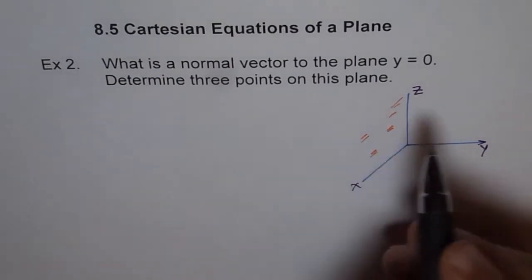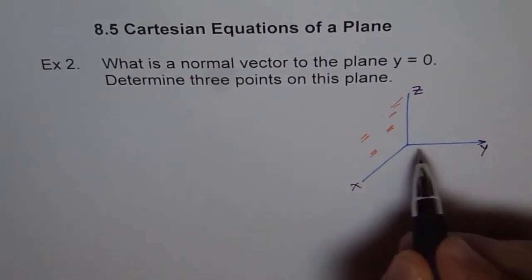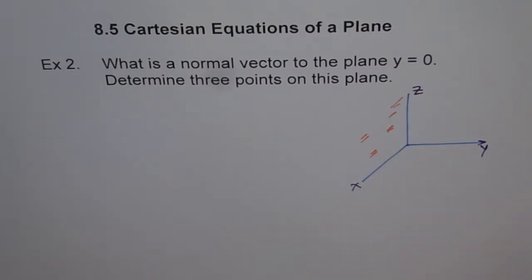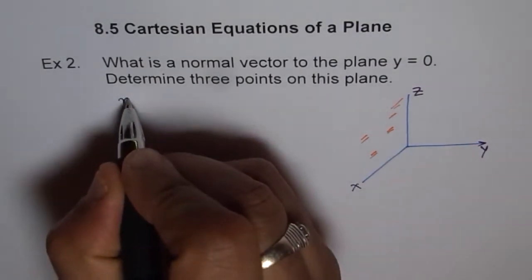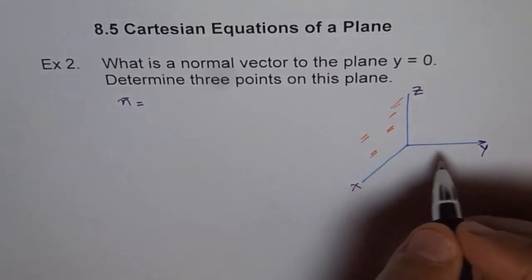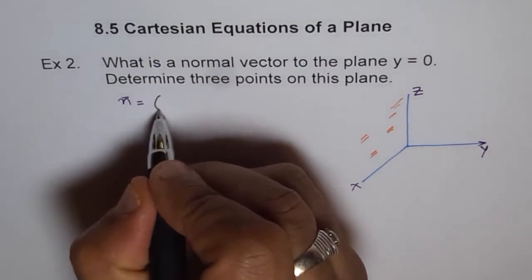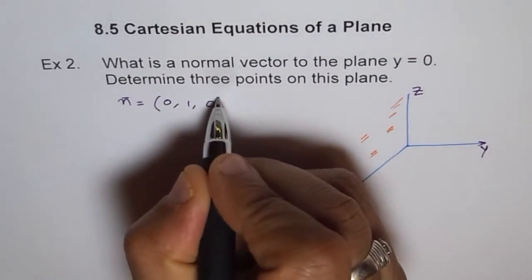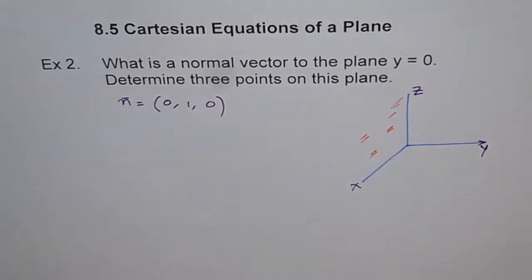Now as you can see, what is normal to this plane? Normal to this plane is the y axis. So the answer is that the normal to this plane is the y axis. How to write y axis? Y axis is (0, 1, 0). That's normal to this plane.